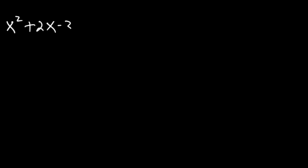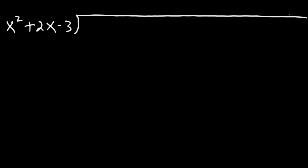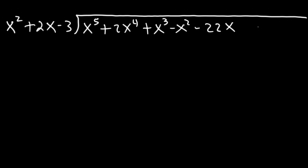Let's try another problem — this one is going to be a lot longer. This time we're going to divide a polynomial by a trinomial. The polynomial is x to the fifth plus 2x to the fourth plus x cubed minus x squared minus 22x plus 15. Go ahead and take a minute to try that example.